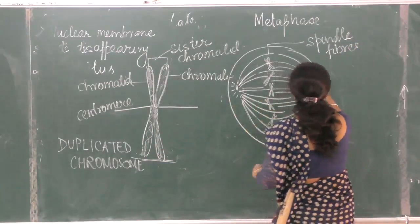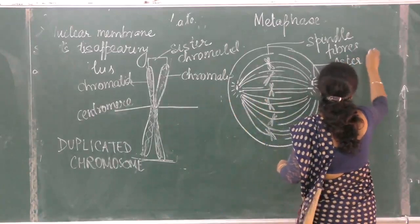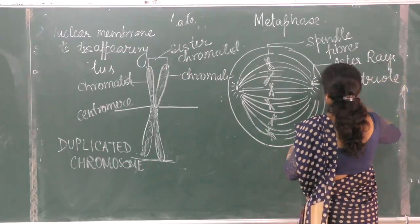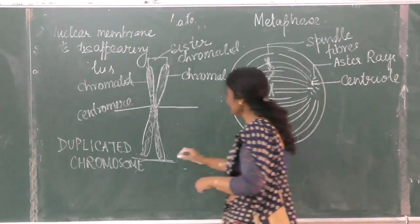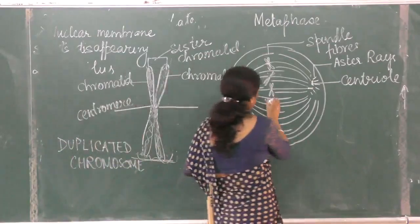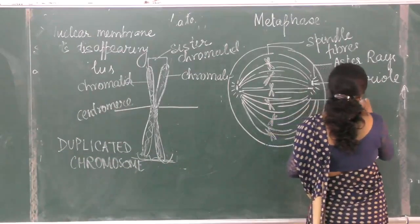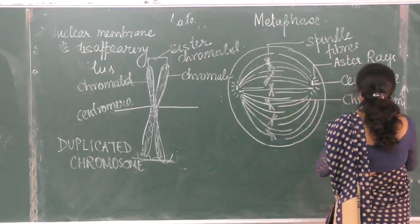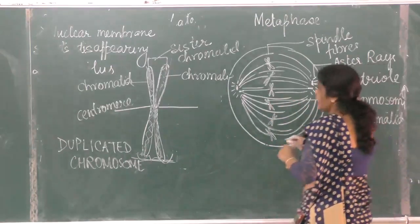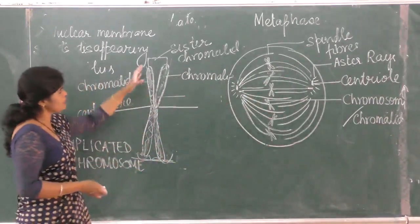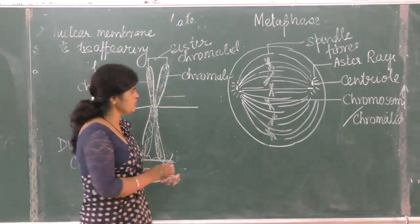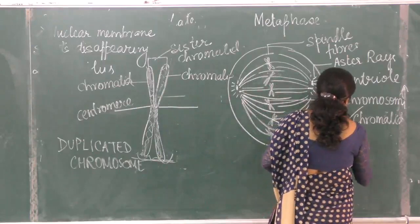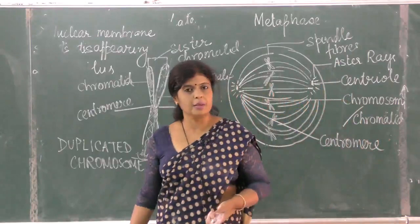Label as many as possible: asters, centriole. This whole thing is a chromosome — you can label it as chromosome, or labeling it as chromatid is also correct. And here you will mark this as centromere. These are the labellings we did not do in prophase because the chromosome was not that clear.